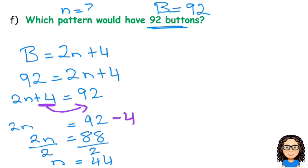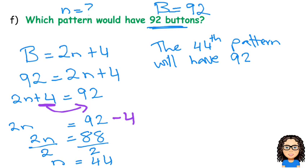So, the question asks what pattern would have 92 buttons. And I can say the 44th pattern will have 92 buttons. And there's our answer.